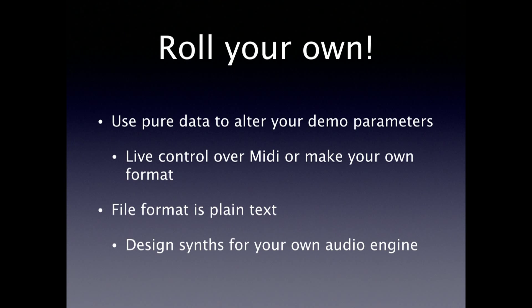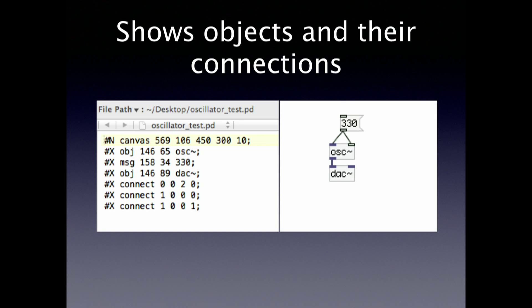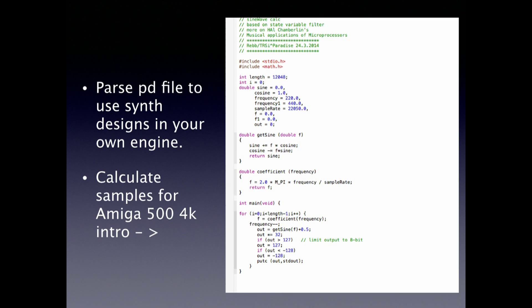Another option is to do your own. You can live-control over MIDI or make your own format. The file format of Pure Data is plain text, so it's easy to parse. You can design synths for your own audio engine without using Pure Data's audio engine - it first lists the objects and then how they connect to each other. So it's really simple to parse this into your own engine. I have a little parser that makes Amiga 500 synths from Pure Data files.